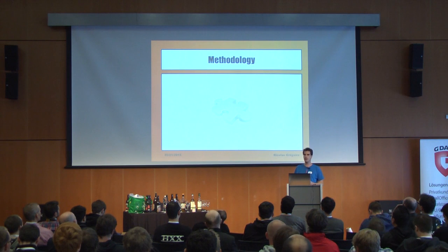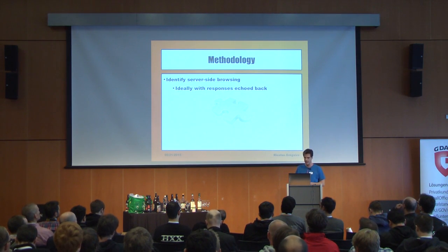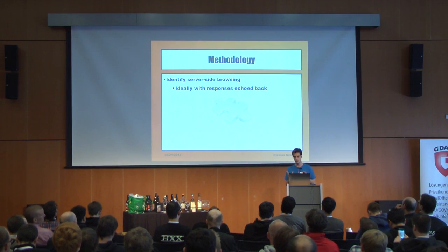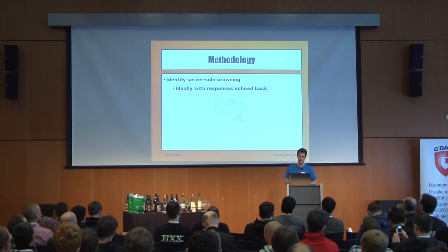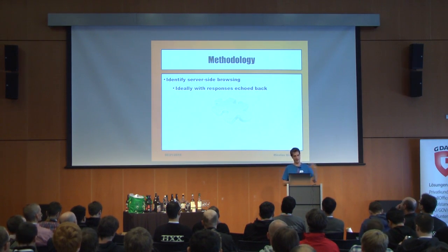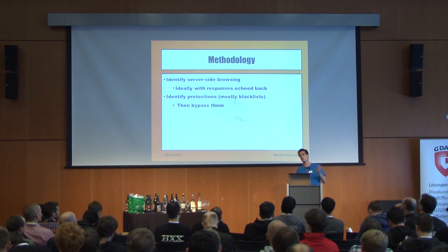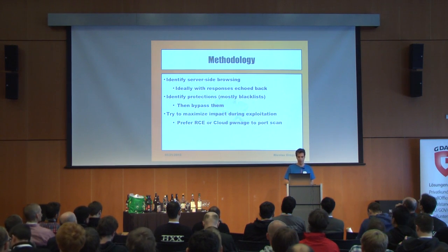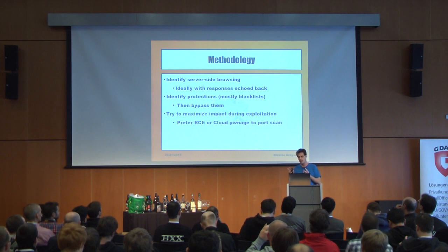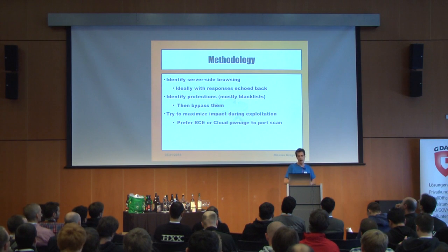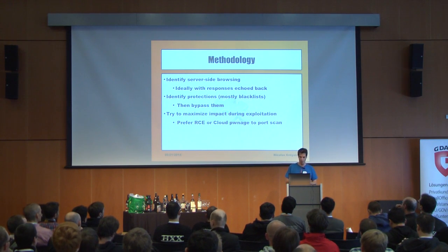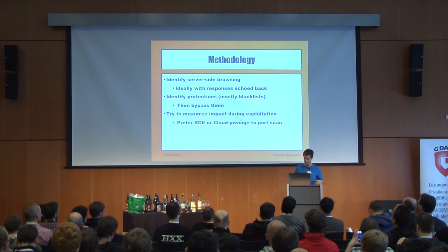The methodology is very basic, very simple, and very dumb. It's only looking for server-side features allowing to take a URL as input. In a perfect world, we want responses echoed back to ourselves so we get feedback. If we don't have feedback, it's still useful. We will identify protections, and most of the time we'll be able to bypass them. Once we have our vector and our target, we have to exploit something and maximize impact — because it's more money for bug bounties. I prefer to report remote code execution or the compromise of a whole cloud setup than just a simple outbound port scan.